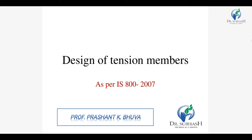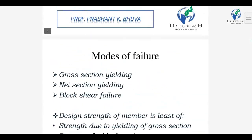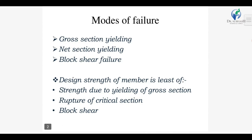Next, we go to the mode of failure while calculating the design of tension member. Basically, three modes of failure are considered while designing a tension member: first is gross section yielding, second is net section rupture, and third is block shear failure. While calculating the design strength of a tension member, all three must be checked.